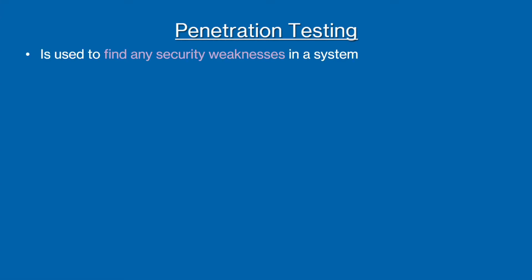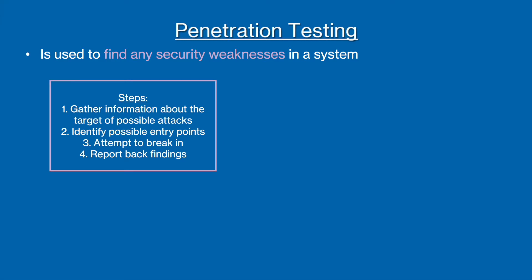The first method is called penetration testing and it is used to identify vulnerabilities in a network. Pen testing works by first gathering information about potential attacks and identifying possible entry points into a network. Then the pen tester will attempt to break into the network as if an attacker, and they will report back their findings so that any spotted weaknesses can be fixed.